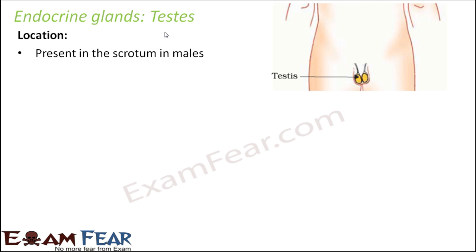Now where are they located? They are present in the scrotum in males. The scrotum is a bag-like structure present in the body of a male, and it is outside the abdomen — not inside. This structure is specifically designed because the sperms which are produced need a different temperature than the body temperature. So if the scrotum were located inside the abdomen, sperms would not be produced. That is why they are located in a separate bag-like structure outside the abdomen.